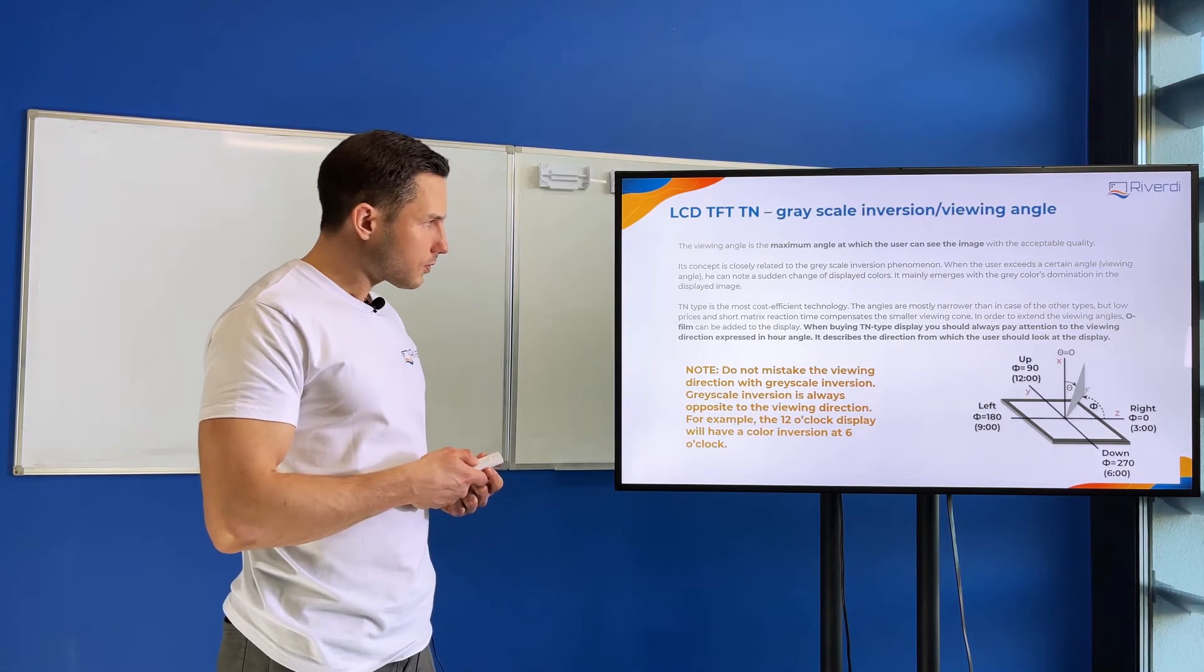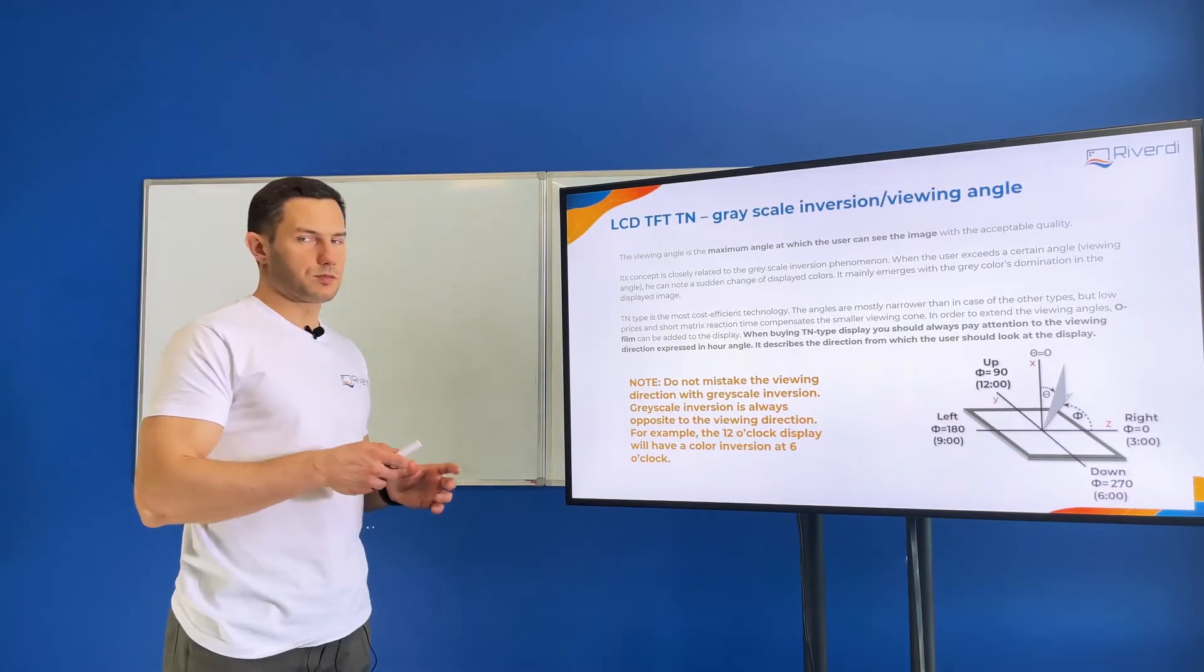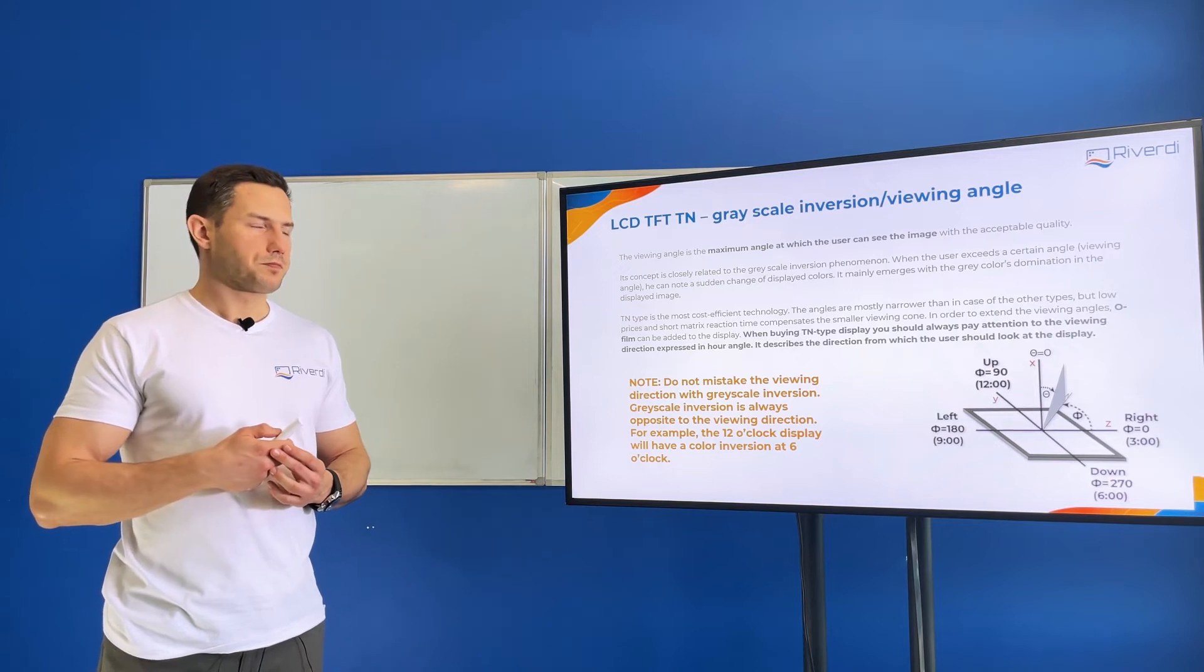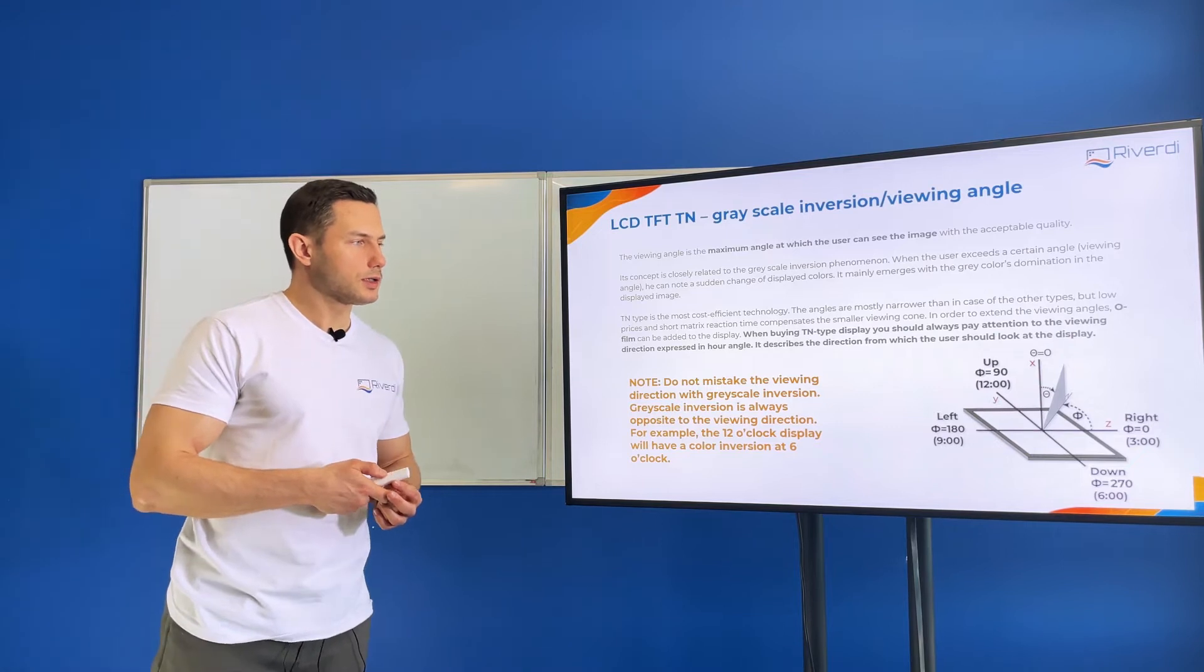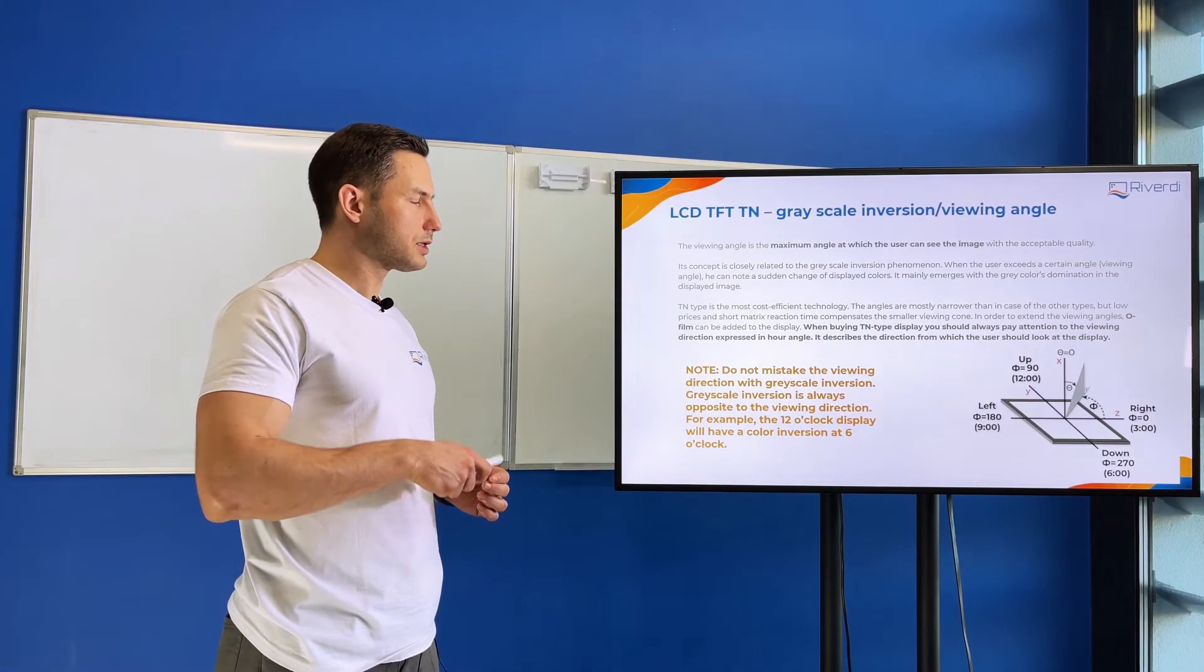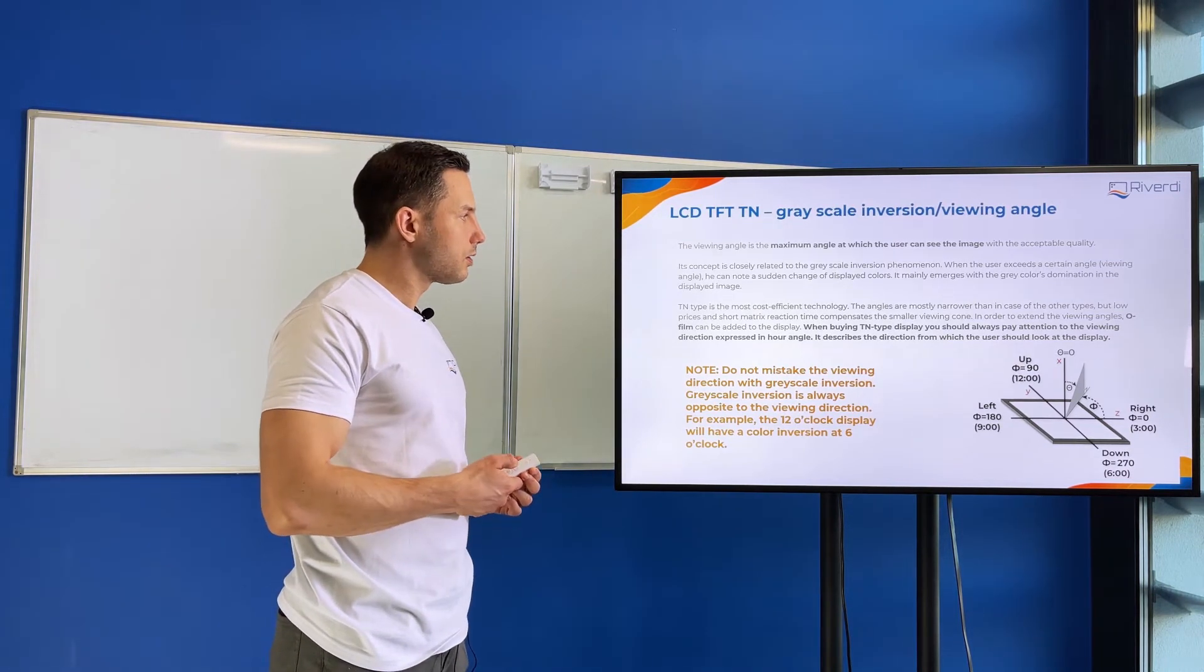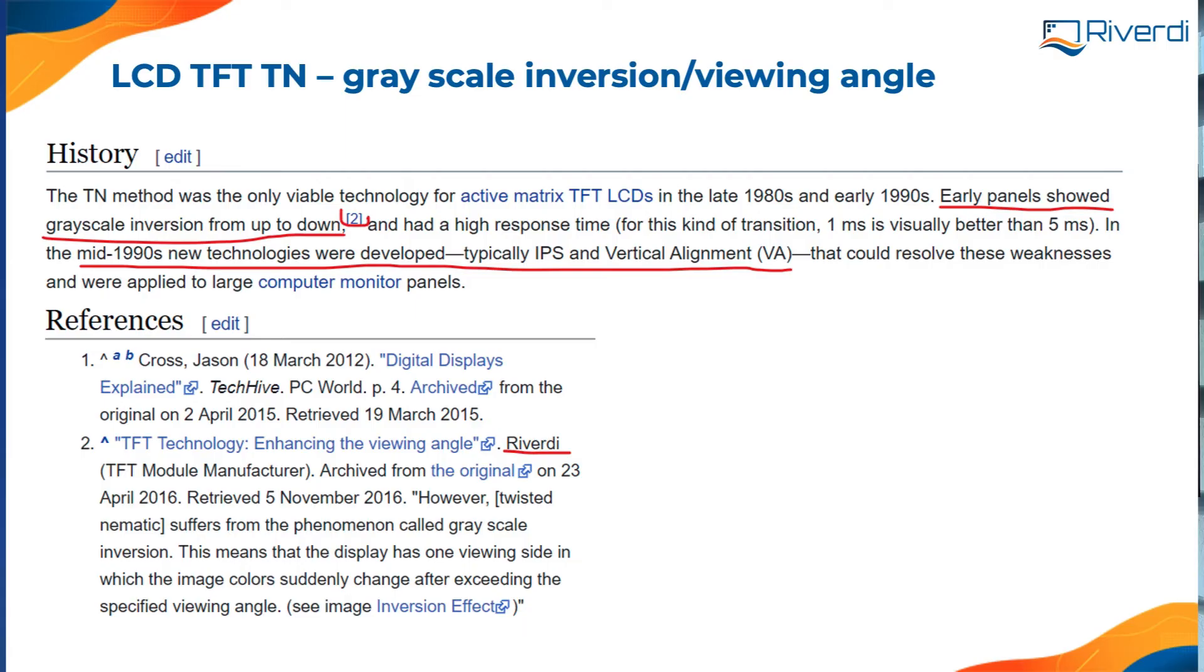This is sometimes confusing. Most factories define something called viewing direction of the screen, and you need to be careful because some companies mistake this for the grayscale inversion side. On the next slide, we'll see more explanation about grayscale inversion.